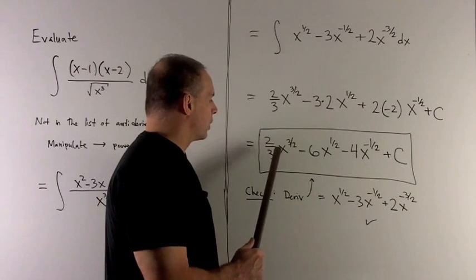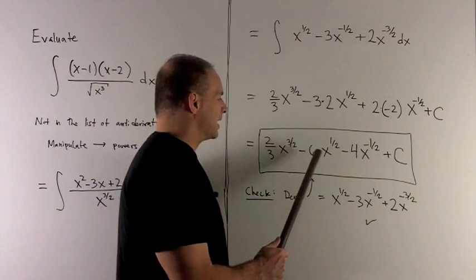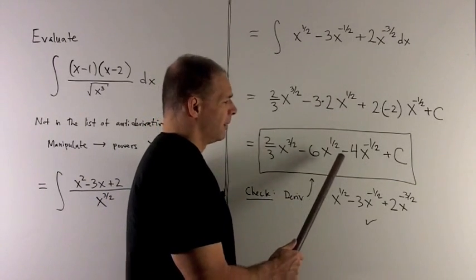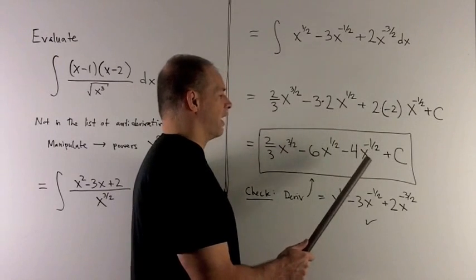So we have our answer, 2 thirds x to the 3 halves, minus 6 x to the 1 half, minus 4x to the minus 1 half, plus a constant.